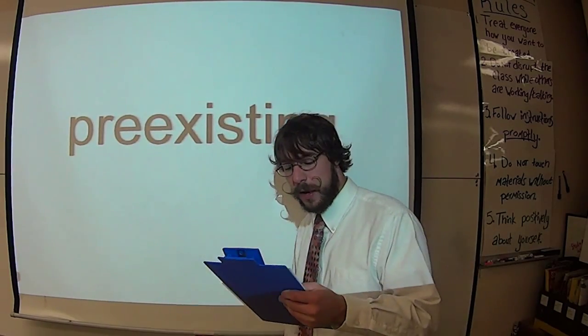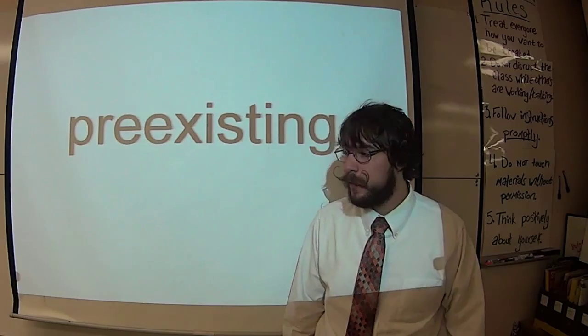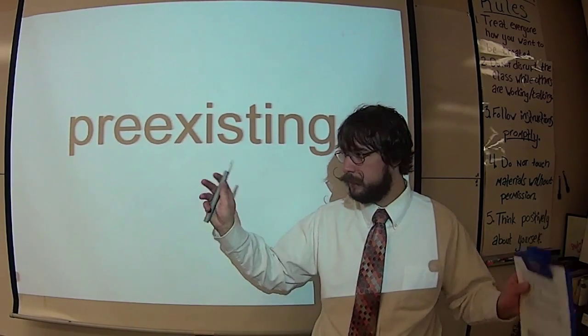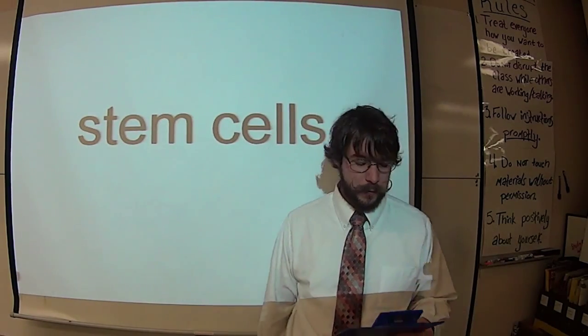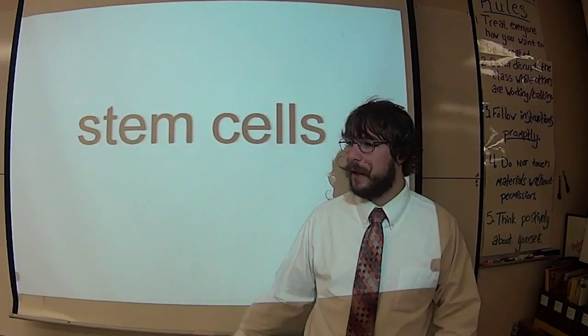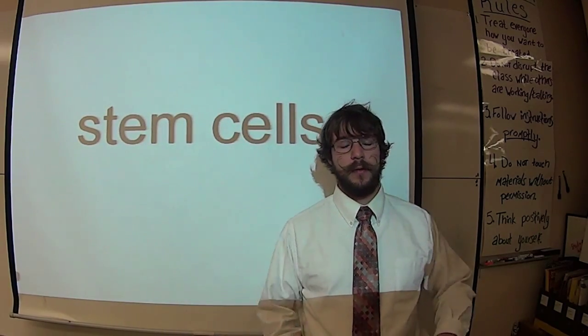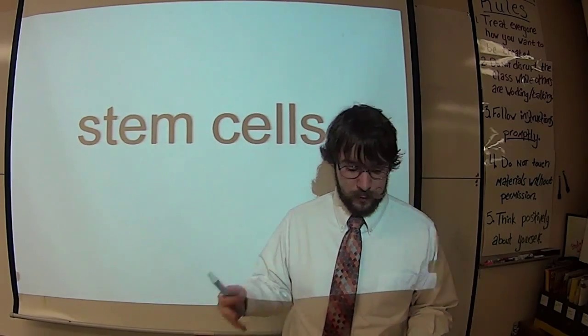That's right, they all come from pre-existing cells. In fact, all cells in the human body can be tracked back to one type of cell. That type of cell is the blank blank. Those would be stem cells. All cells in the human body can be tracked back to stem cells, just like the stem gives rise to all the branches of the tree. The stem cell gives rise to all the cells of the body.